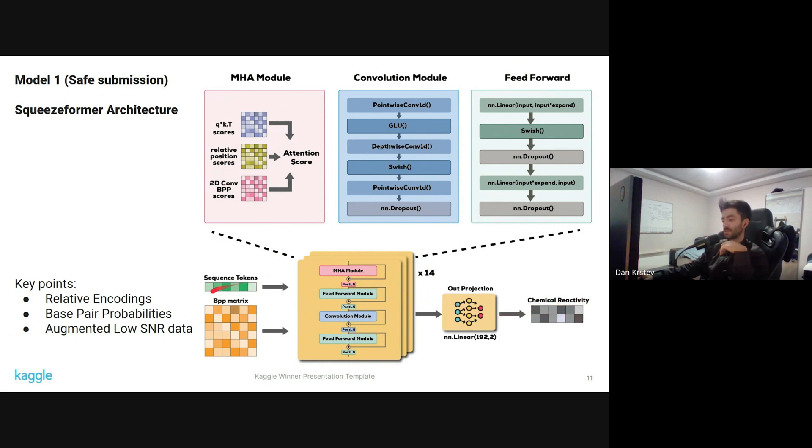As input for this model, I used sequence tokens along with BPP matrices. Some of the key points are, as discussed before, use of relative encodings, the injection of base pair probabilities into the attention scores, and also using synthetically created data from the noisy, low signal-to-noise ratio data.